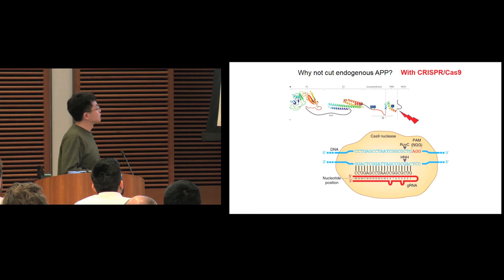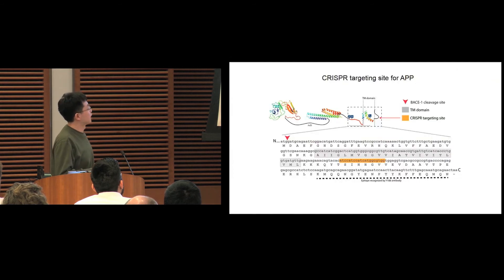We looked at the C-terminal of APP and found one CRISPR targeting site at the intracellular domain, shown in orange color. The transmembrane domain is shown in gray. To test the effect of CRISPR, we use an APP antibody called Y188, which recognizes the last 20 amino acids. So if CRISPR works, the antibody shouldn't detect the truncated protein.